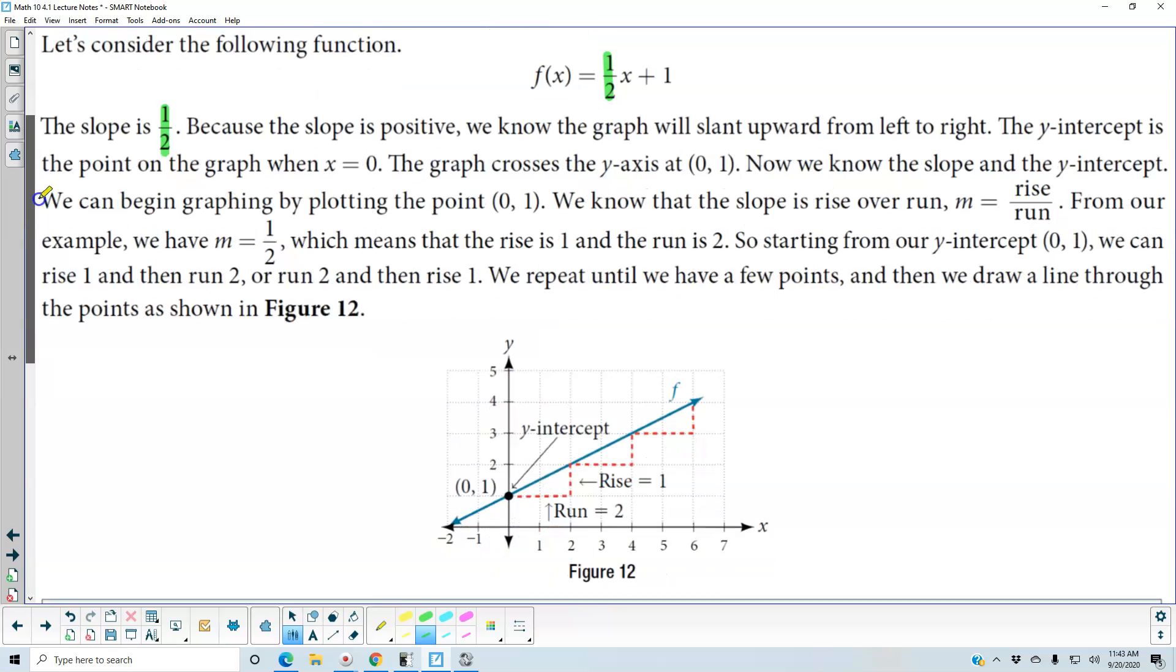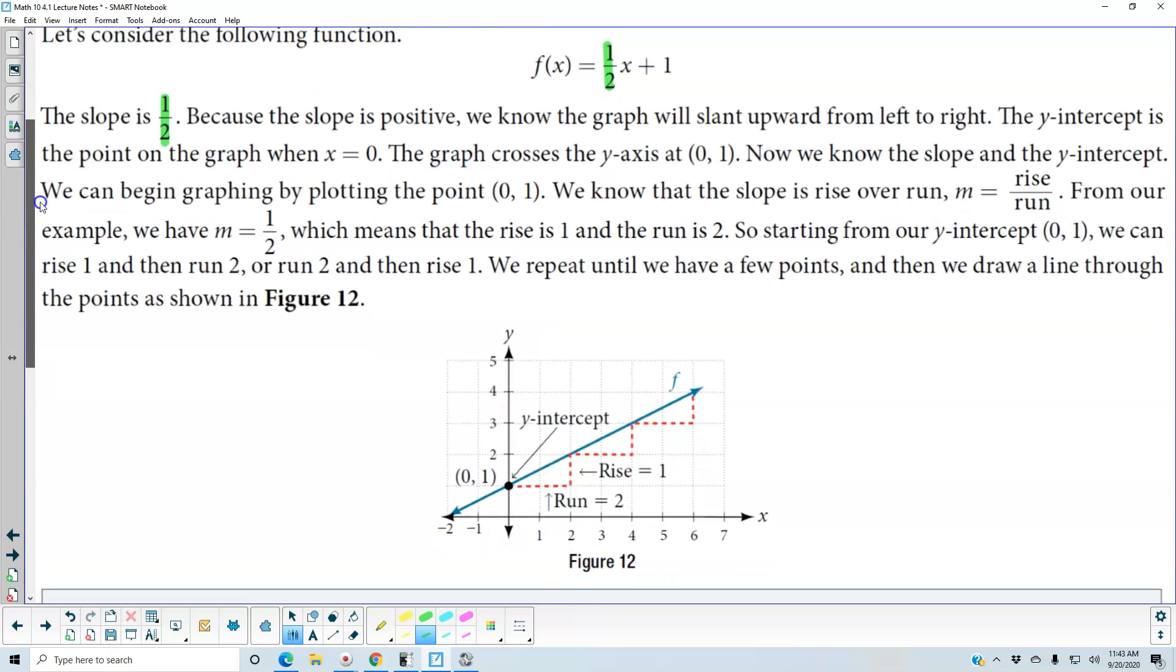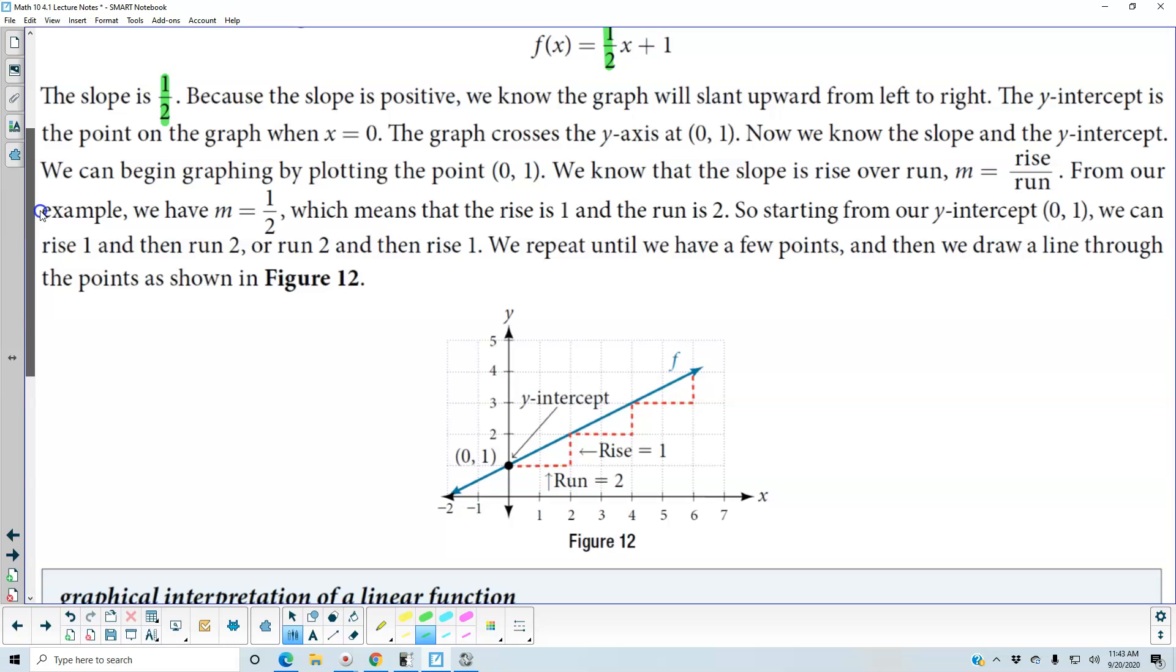By starting at the y-intercept zero one, we can rise one and then run two, or run two and then rise one. Repeat until we have a few points and then draw a line through the points.